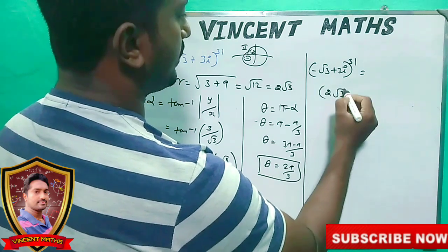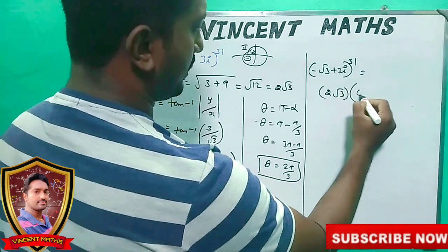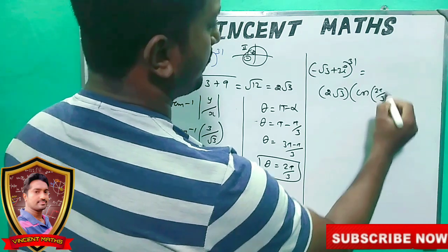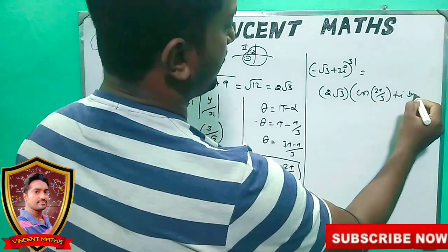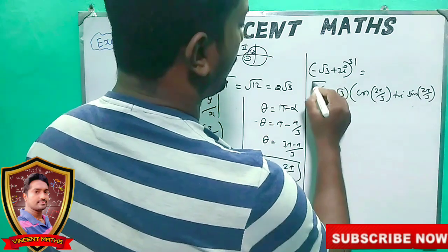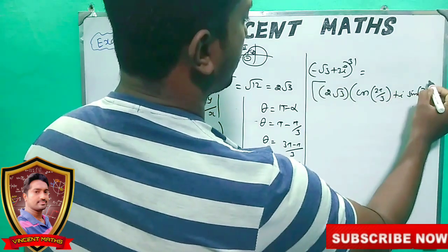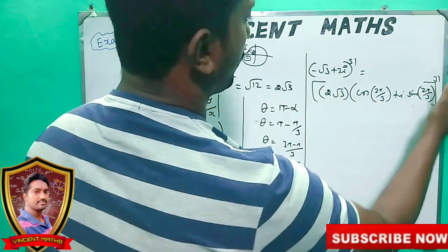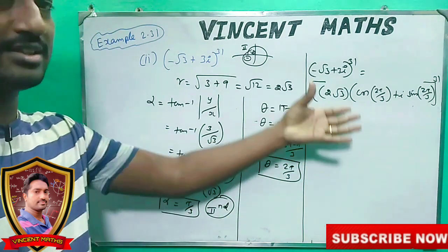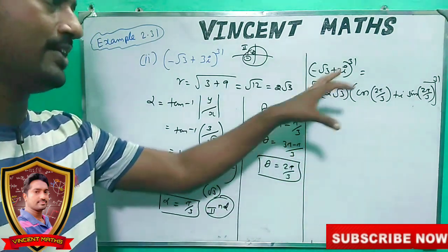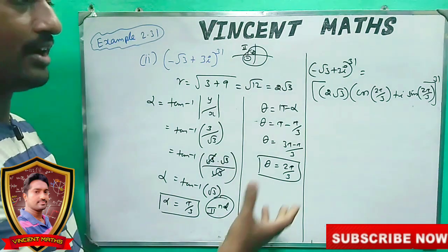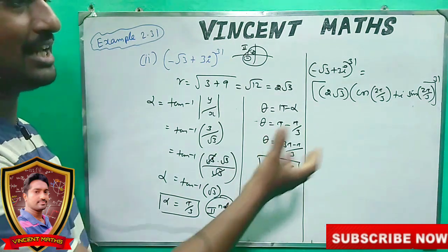Polar form: 1 times cos 2 pi by 3 plus i sin 2 pi by 3, whole power 31.